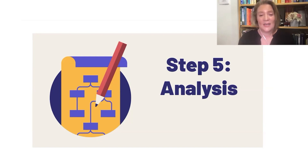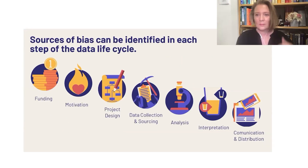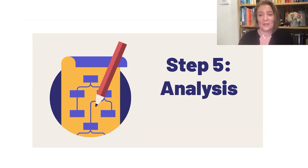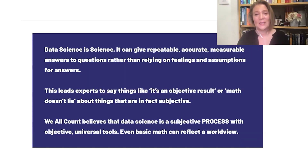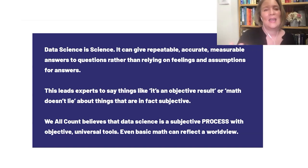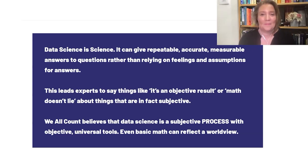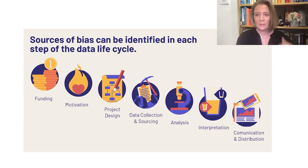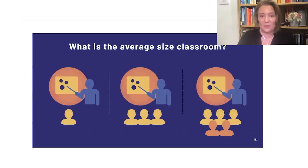Step five is analysis. Sometimes, as a data journalist, you're doing your own analysis, and sometimes you're going to rely on other people's analysis. Analysis itself is not objective. There's a big difference in saying there's no such thing as a fact versus worldviews are embedded into data. We, as journalists, need to understand how worldviews are embedded into data and make that transparent in our data journalism stories.